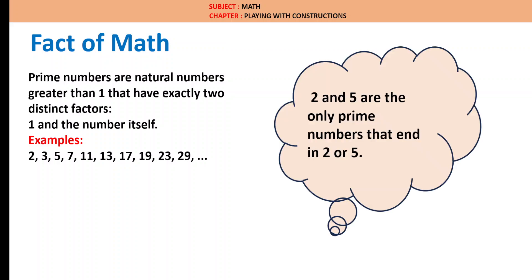2 and 5 are the only prime numbers that end in 2 or 5. If we take any other prime number, it will not end with 2 or 5 except 2 and 5. For example, 42 is not a prime number, 45 is not a prime number, 95 is not a prime number, 92 is not a prime number and so on.